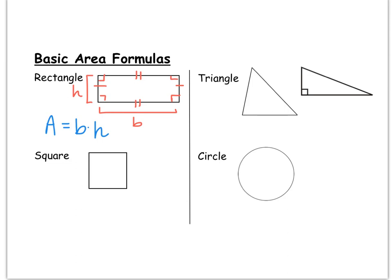For a square, we can think of it as just being a special case of a rectangle. It still has four right angles, but a square has four equal sides. We'll label each side length with S. We can think of the area as base times height, or we could write it as side times side, or in shorthand, side squared (S²).